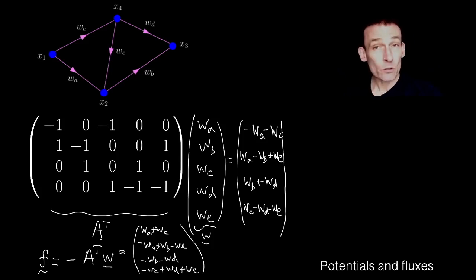Well, first of all, given that I've now got a four-dimensional vector as the result of this, F is four-dimensional, it's a property of the nodes because there's four nodes. So let's stare at node one and look at the quantity WA plus WC. Well, if you're looking at the picture of the graph, what would you describe that as? If WA and WC are the flux along the edges, isn't WA plus WC, the first element of F, isn't that the total flux out of node one? I think so.